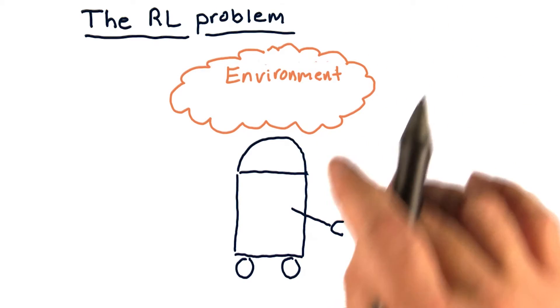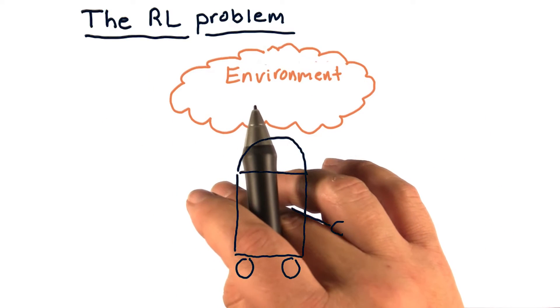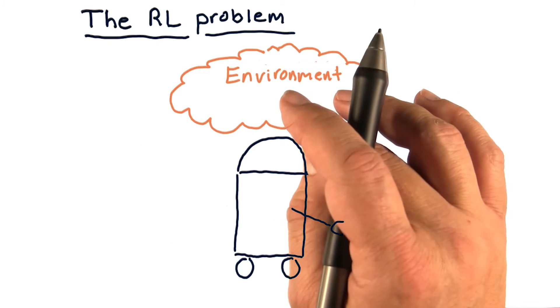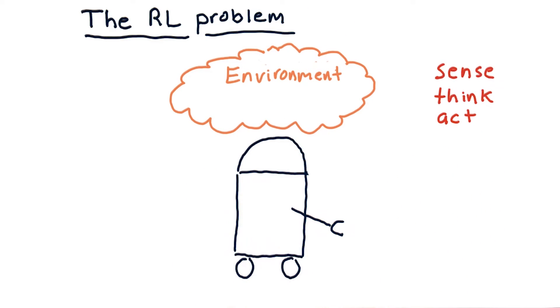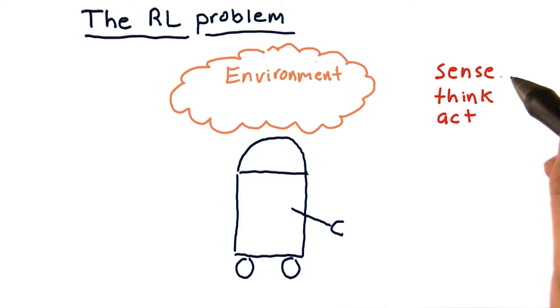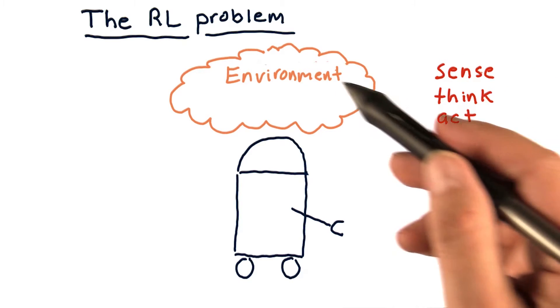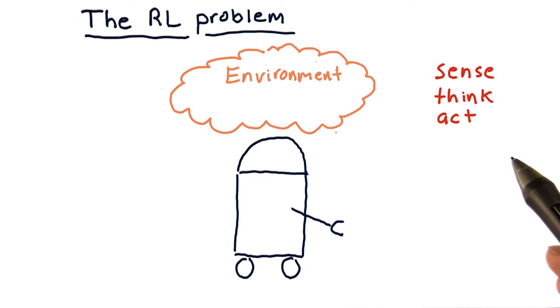The robot's going to take actions that'll change the environment. It will sense the environment, reason over what it sees, and take another action. In robotics, we call this the sense, think, act cycle. You don't have to implement it only using reinforcement learning. There's many ways that you can implement sense, think, act, but we're going to focus on how to do that with reinforcement learning.